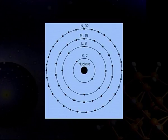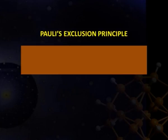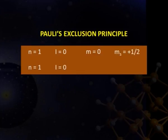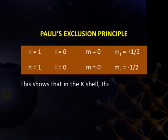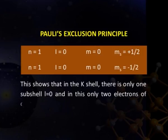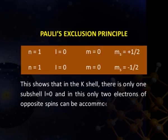Hence, the spin quantum number ms can be either plus half or minus half. Thus there are two combinations of quantum numbers. If n=1, l=0, m=0, ms=+½; and n=1, l=0, m=0, ms=−½. This shows that in the K shell there is only one sub-shell (l=0), and in this only two electrons of opposite spin can be accommodated.